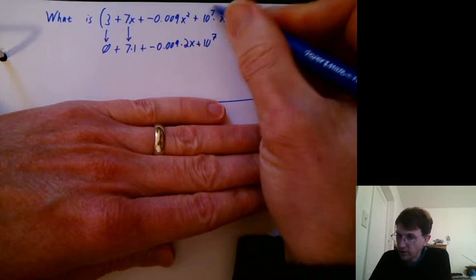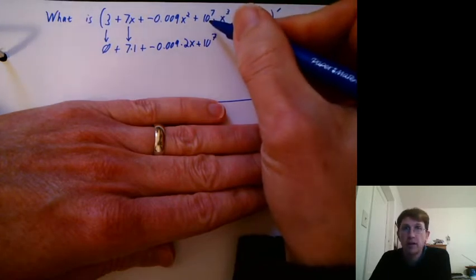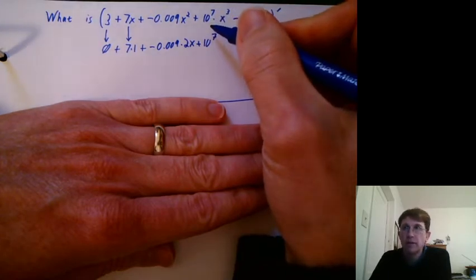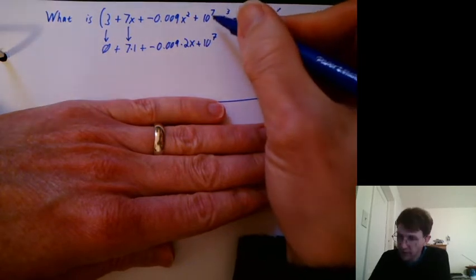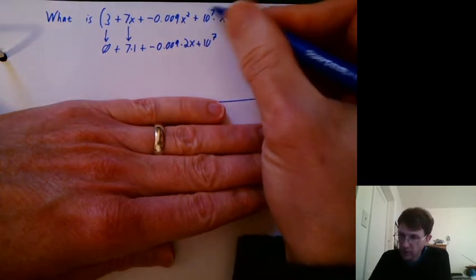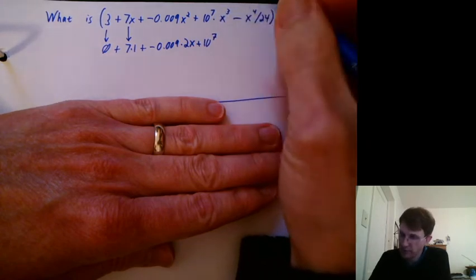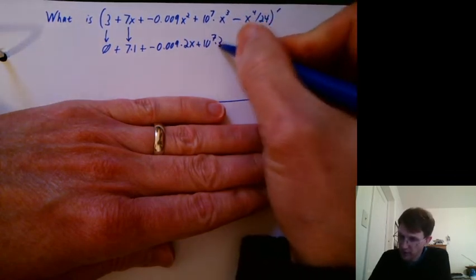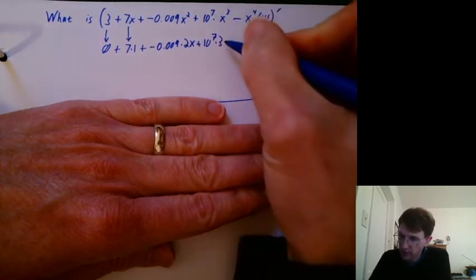I could have written now 10 million. 10 to the 7th is 10 million. And you might have been less tempted to try to take the derivative of it because it's obviously a constant. But when you've got an exponent here, maybe it doesn't feel like a constant, but it still is. So then the derivative of x cubed is 3x squared.